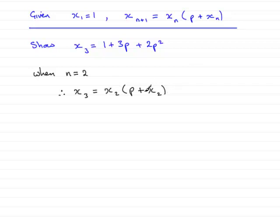But what is x₂? Well, we found in the previous question that x₂ was p plus 1. So this is going to be p plus 1 multiplied by the p here plus x₂ again, which is p plus 1.